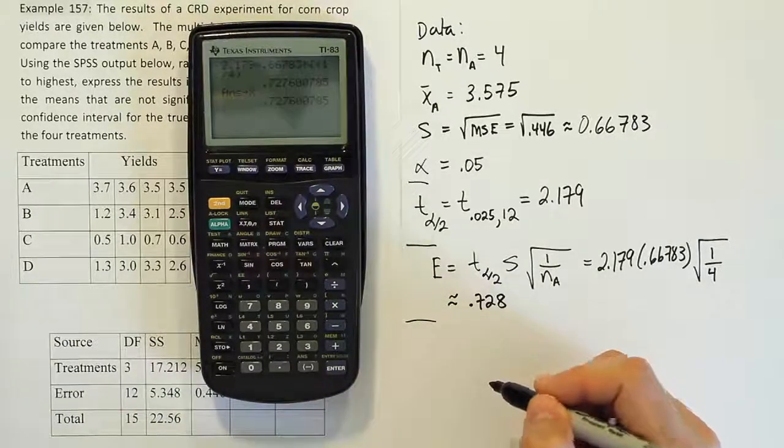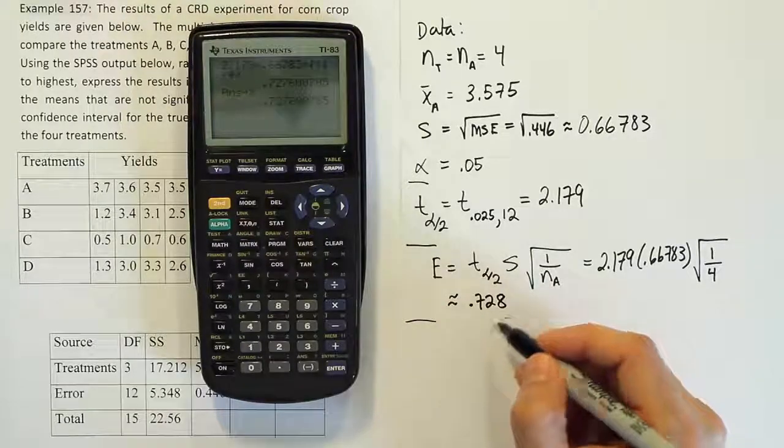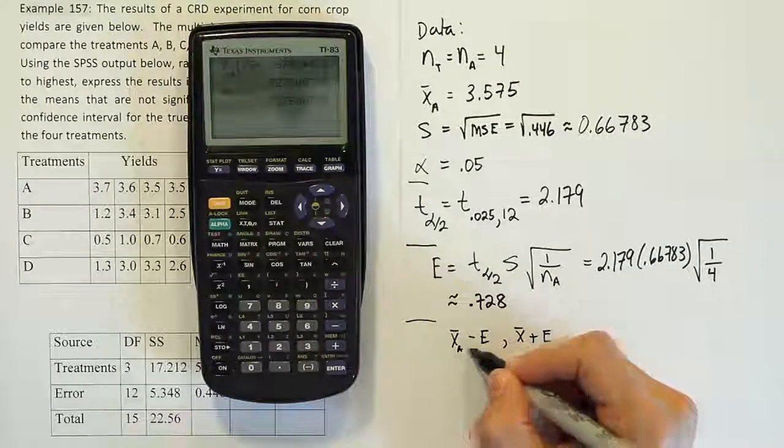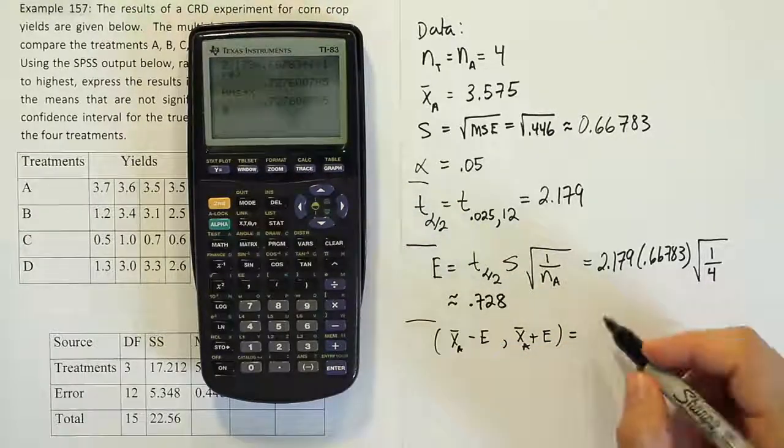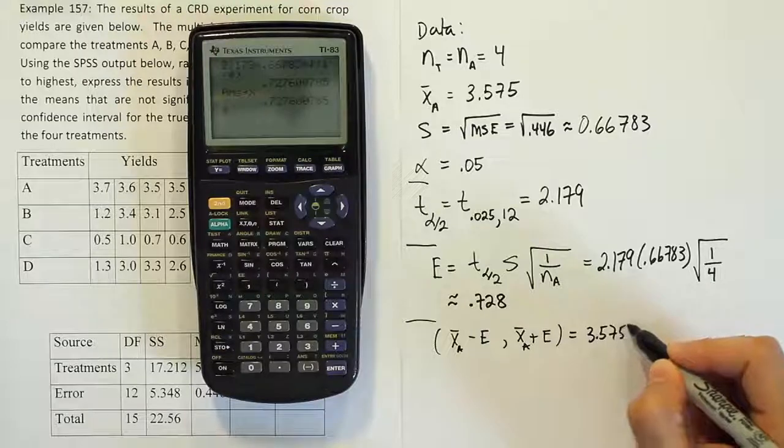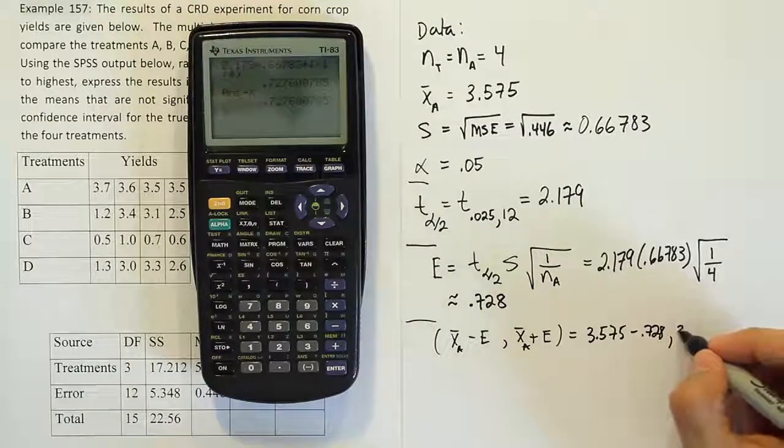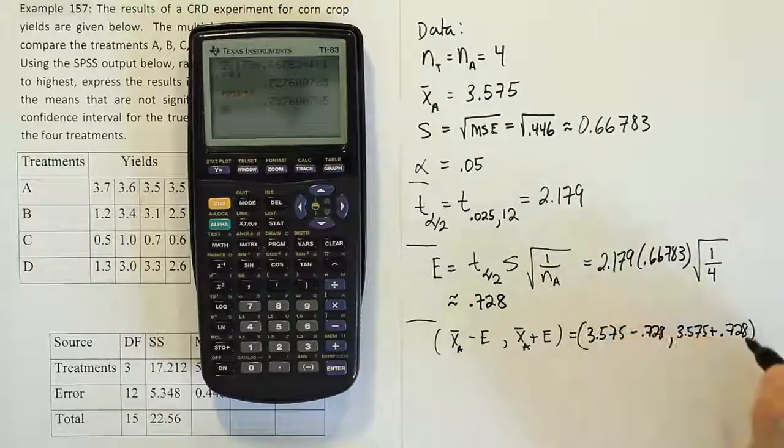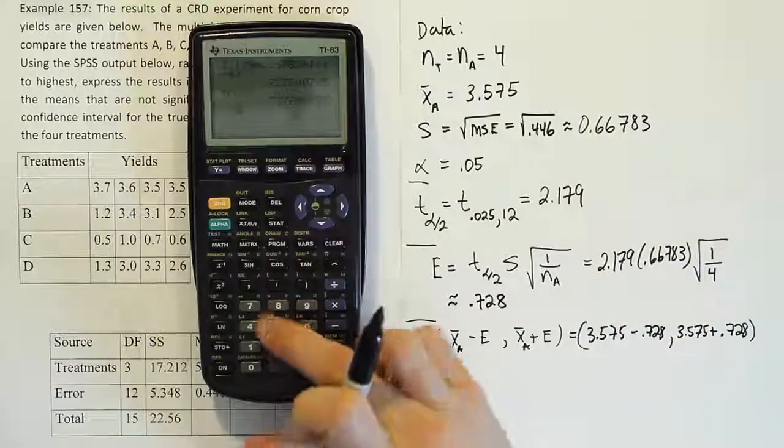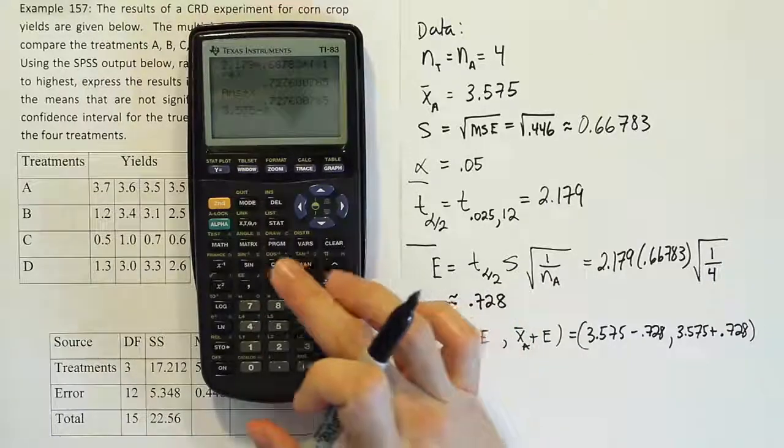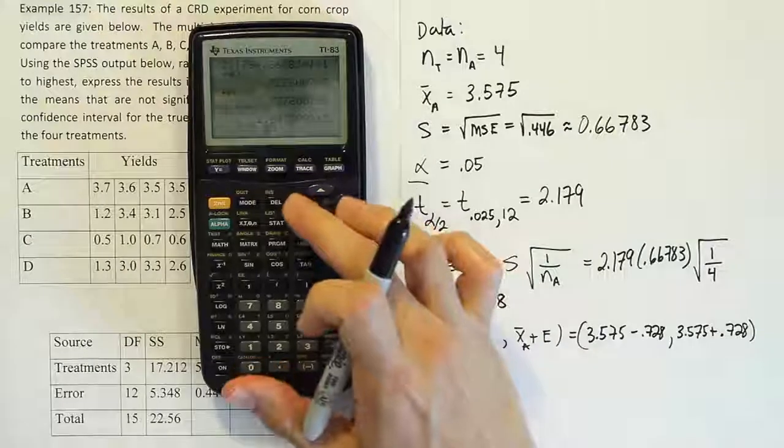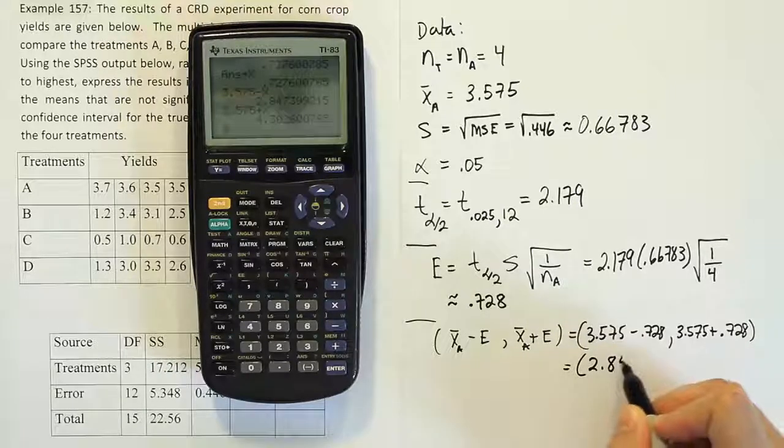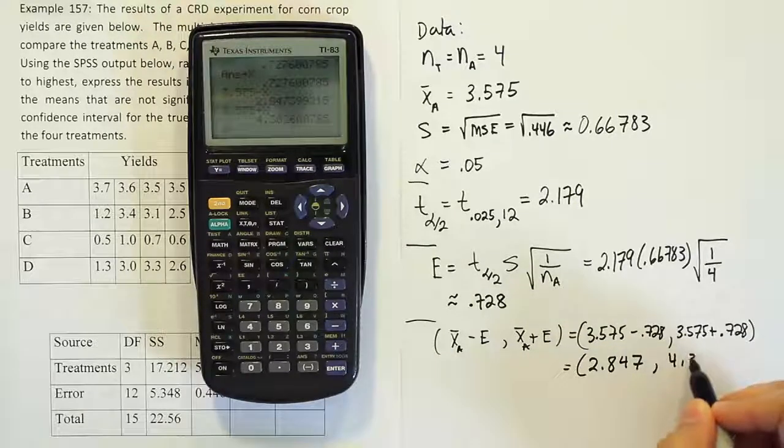Okay, and then finally, our last step. We're going to take the sample mean and add and subtract this error from it. So we have x bar minus E, x bar plus E normally. The only difference here is it's x bar A, x bar A. Okay, so x bar A is 3.575 minus 0.728 and then 3.575 plus 0.728. Let's see what we get when we do that. So 3.575 minus our error and then the same thing plus our error. And when you're done, you get the answer 2.847 up to 4.303.